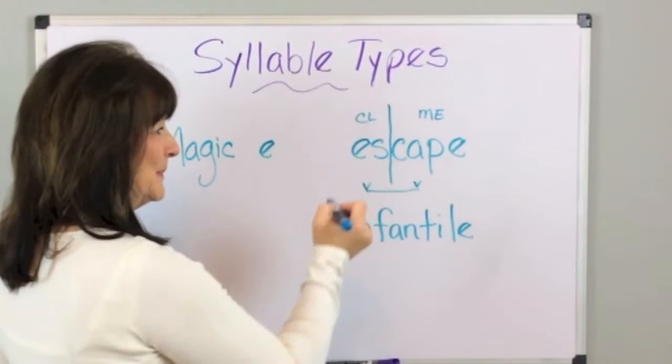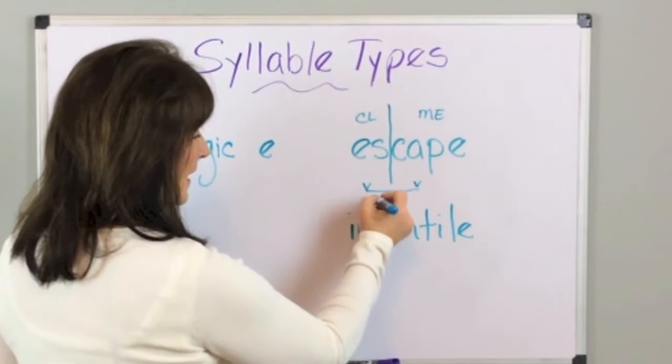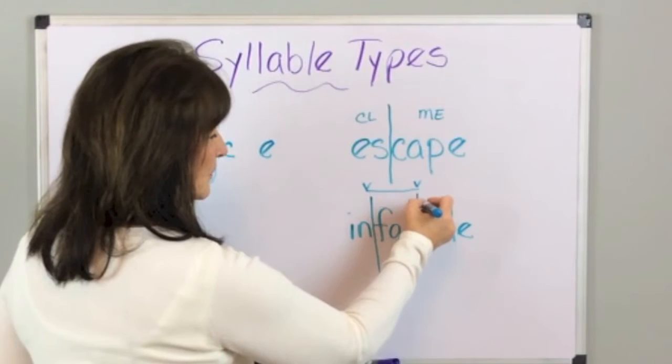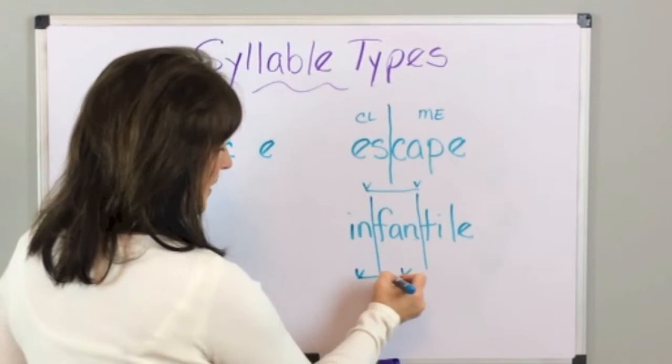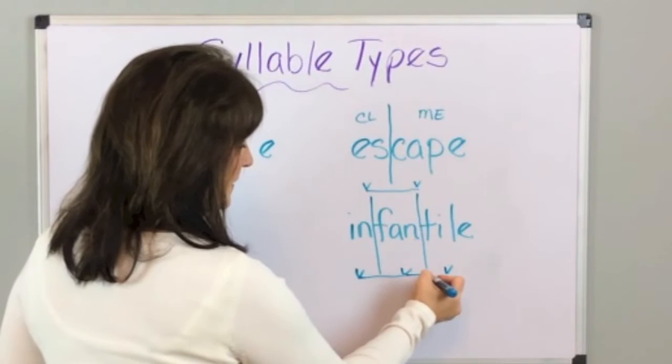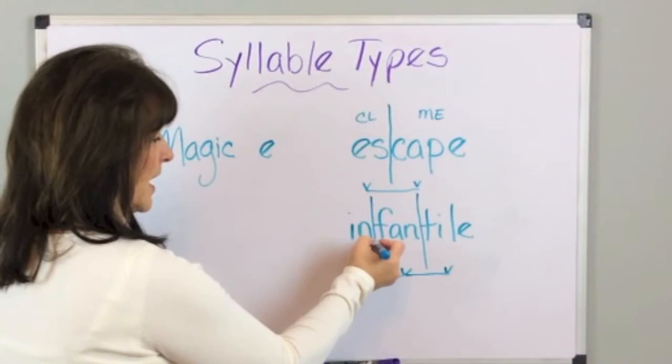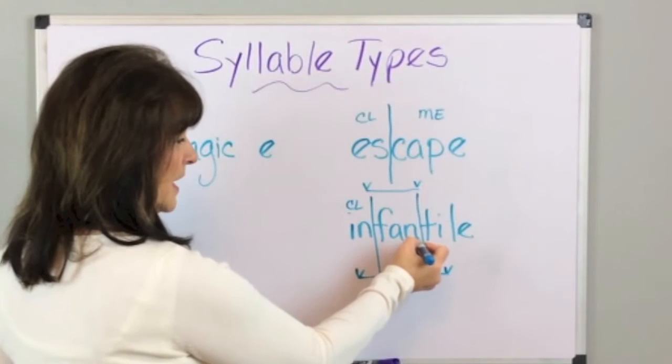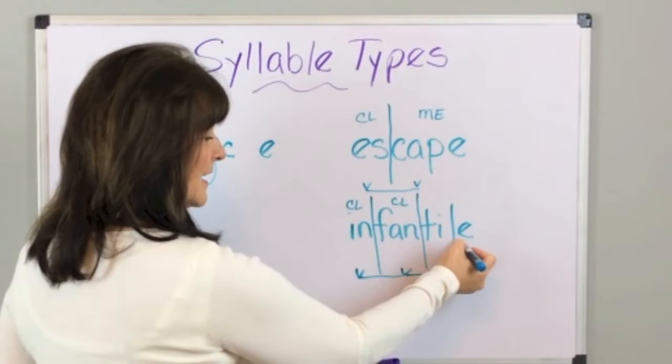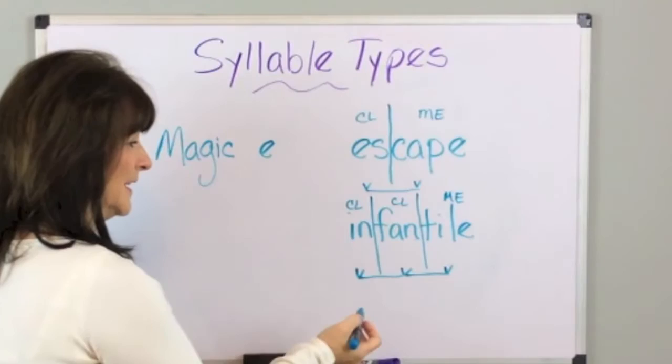Now let's do infantile. You have a vowel-consonant-consonant-vowel, so we divide here, and another vowel-consonant-consonant-vowel, and we divide again. Look for your vowels, draw the bridges. You have a vowel and consonant making a closed syllable with a short vowel sound, another closed syllable with a short vowel sound, and then I-consonant-E making it a Magic E with a long vowel sound. So we decode this as infantile.